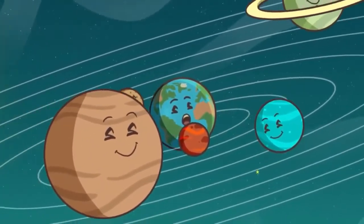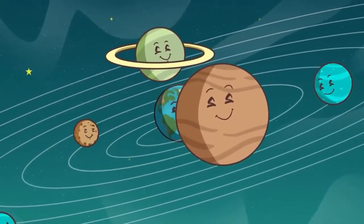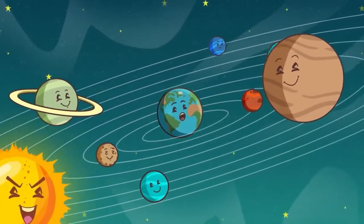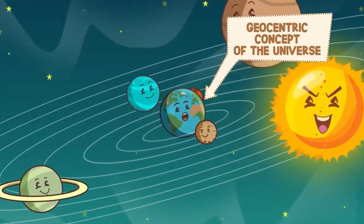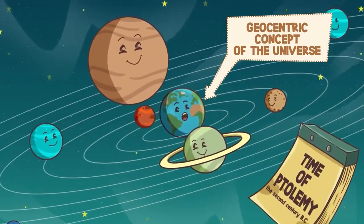For a long time, European philosophers and scientists believed that the Earth stood still in the center of the universe and every other body, including the sun, moved around it. In the West, this geocentric concept of the universe was prevalent right from the time of Ptolemy in the 2nd century BC.